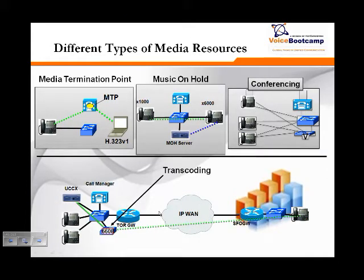One thing about media resource is that in Unified Communication in Cisco, you have four types of media resources. First, the media termination point. Media termination point is responsible for providing backward compatibility and supplementary services when there are incompatibility issues. For example, you have call manager talking to H.323 version 1, talking to H.323 version 2 or 3. When there's a version difference, there's some incompatibility because of new enhancements in the newer version. You can use a media termination point, which proxies all the traffic through this MTP device. Media termination point could be hardware or software.